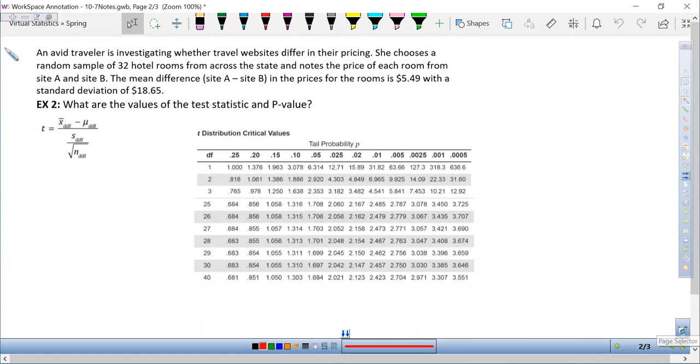We are given the following information. Remember that we need the average of the data, the mean difference value that we assumed in the null hypothesis, the standard deviation of the data, and the size of the data. All of those things are given to us. Remember that we assumed here that mu diff is 0, so we're going to plug a 0 in for that value.